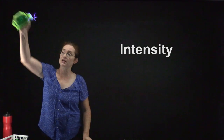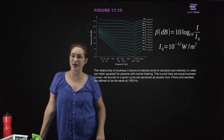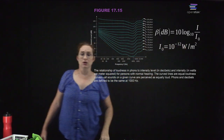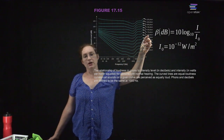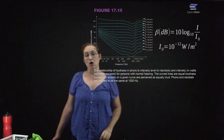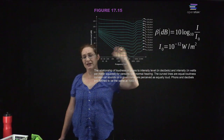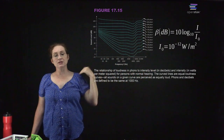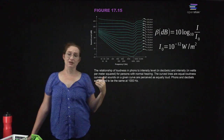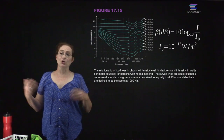We can talk about the intensity of waves. A decibel is how we measure the intensity of the wave. The intensity is the amount of energy per unit area. We measure decibels as: 10 times the log base 10 of the intensity over the reference intensity I-naught. The reference intensity is 10 to the negative 12 watts per meter squared. Every time you go up by 10 decibels, the amount of energy in the sound has gone up by an order of magnitude.